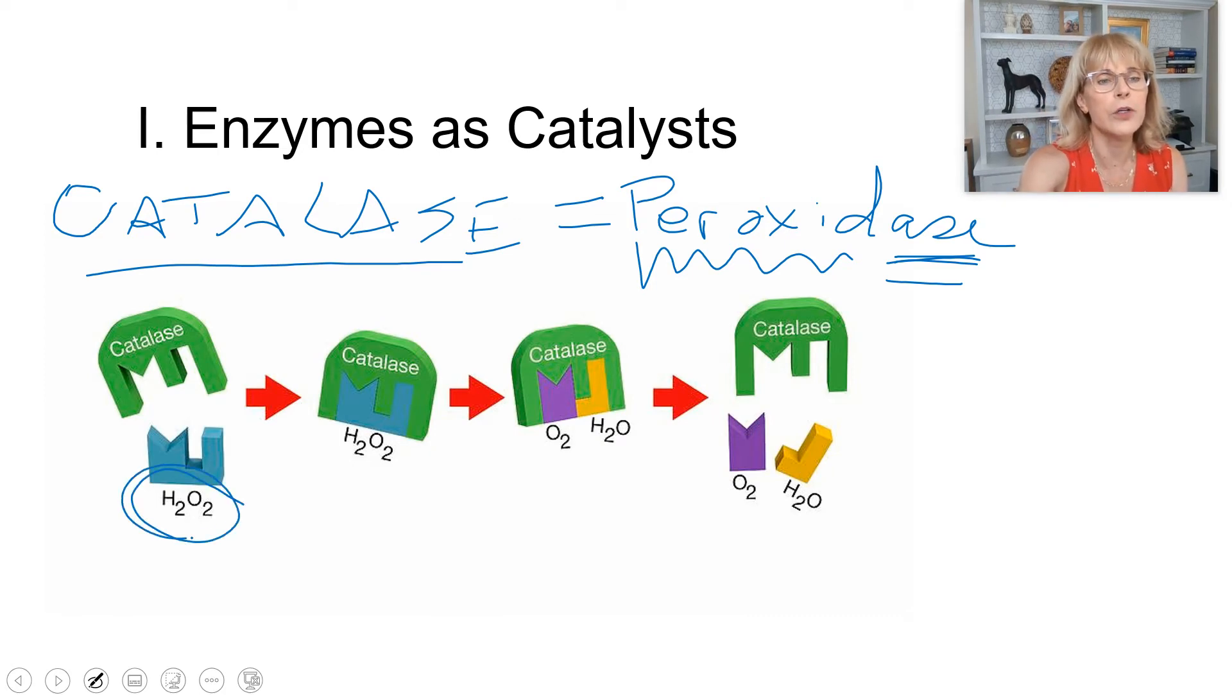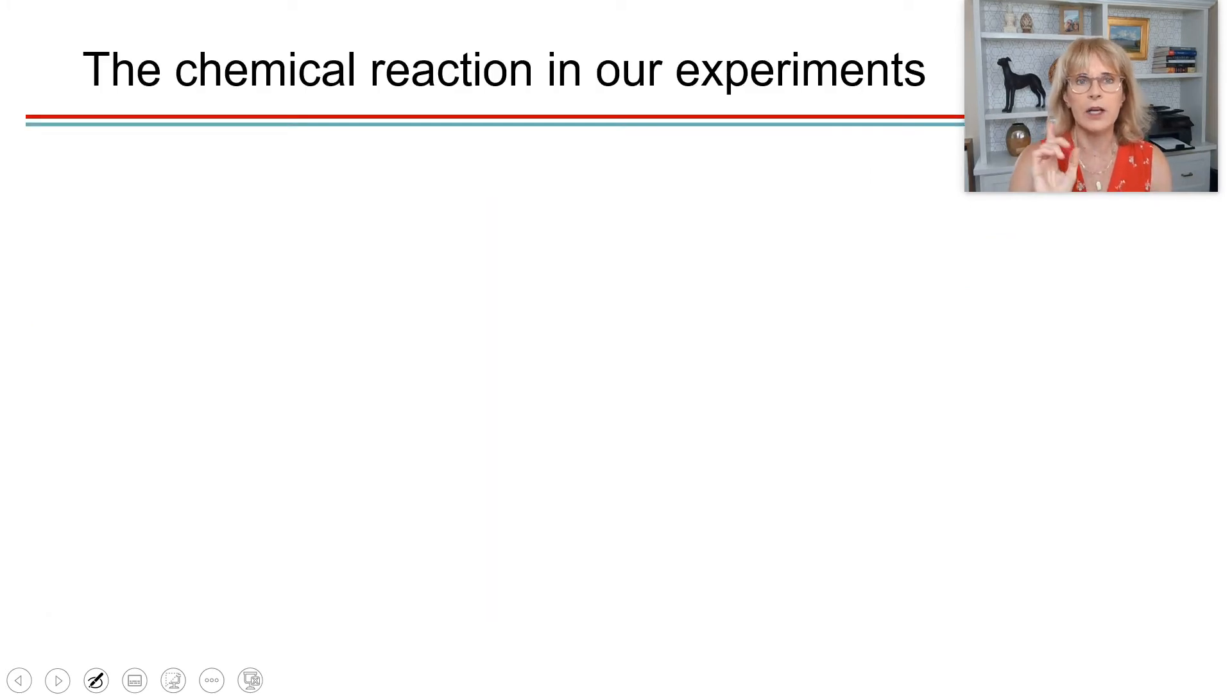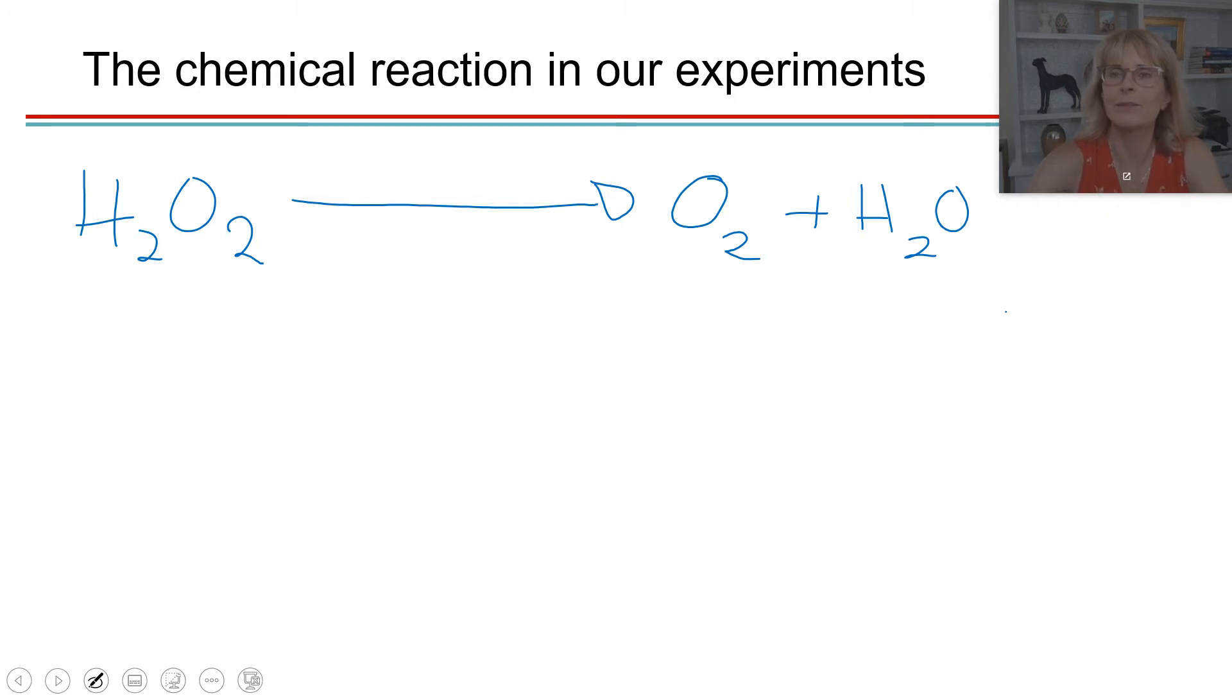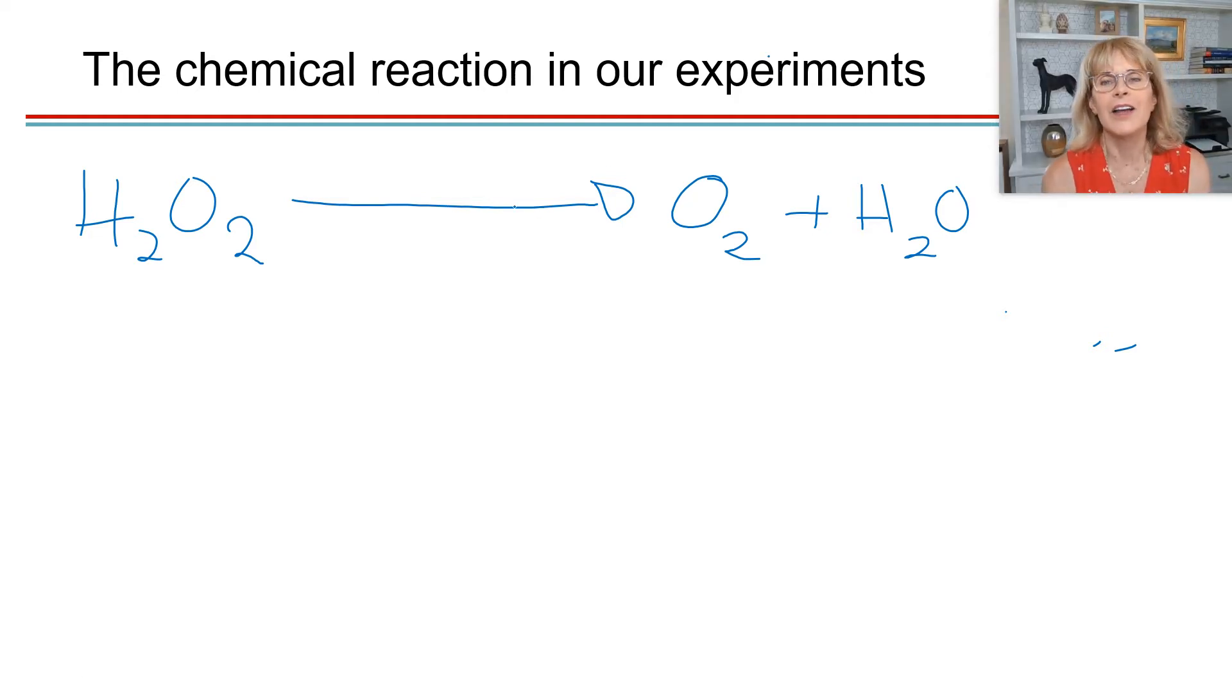Now, catalase is going to take a molecule of hydrogen peroxide and let's practice for our exam. Hydrogen peroxide, H2O2, that represents a molecule that has got two atoms of hydrogen and two atoms of oxygen in each one. So catalase is an enzyme that takes hydrogen peroxide and breaks it apart. And it breaks it apart into oxygen and a water molecule. Let's talk about that a little bit more. The chemical reaction in these experiments is to take H2O2 and to turn it into oxygen and water. That is our chemical reaction.